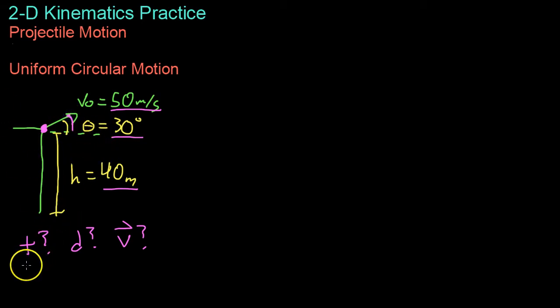And what do we want to find out? Well we want to know how long does it take for the projectile to hit the ground. In that time how far does it go? So from the cliff where does it end up? We'll call this distance D. And then what is its velocity both its speed and magnitude once it hits the ground.